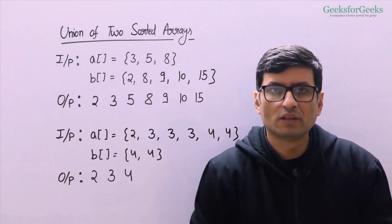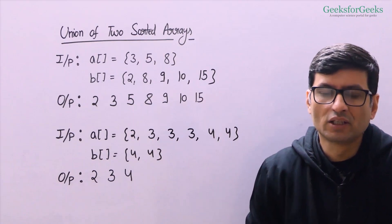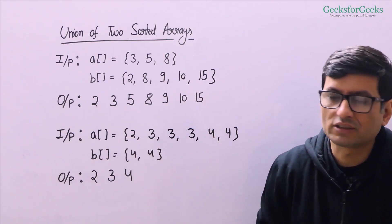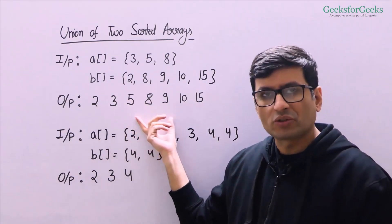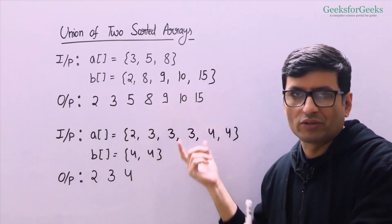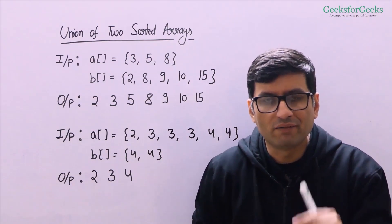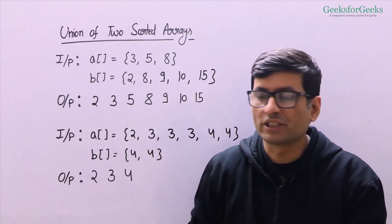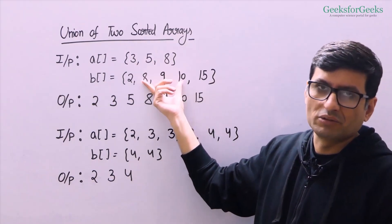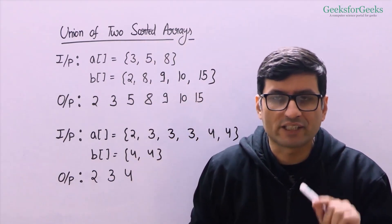Let us talk about this problem. We are given two sorted arrays and we need to print the union of these two sorted arrays. Our output should also be sorted — every element should be printed in sorted order. By union, we mean we need to print every element which is present in both the arrays, all elements of array 1 and array 2, and we need to print every element exactly once.